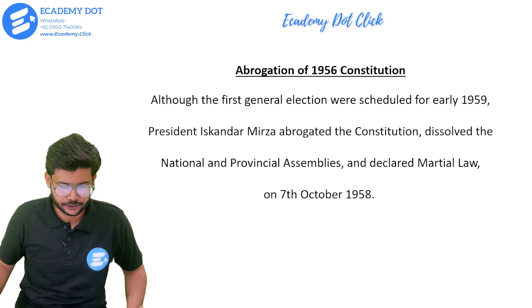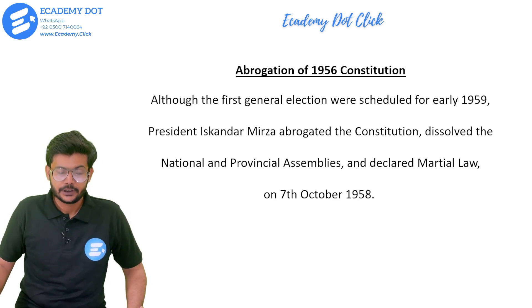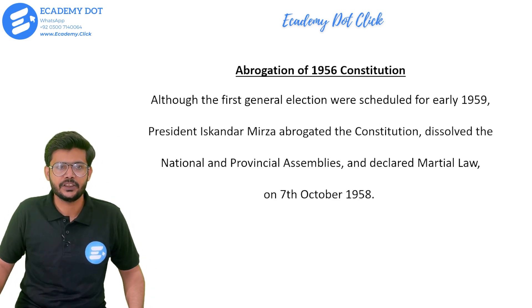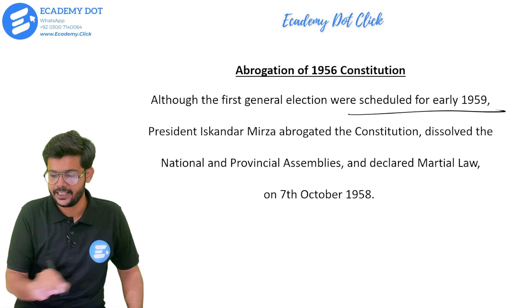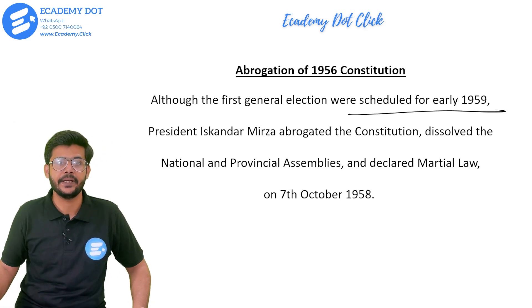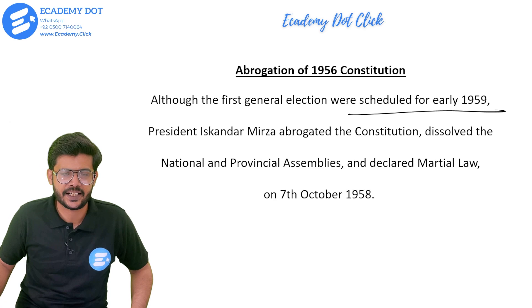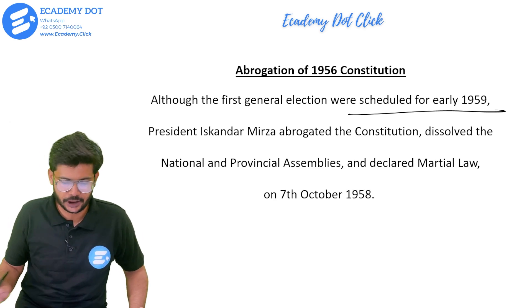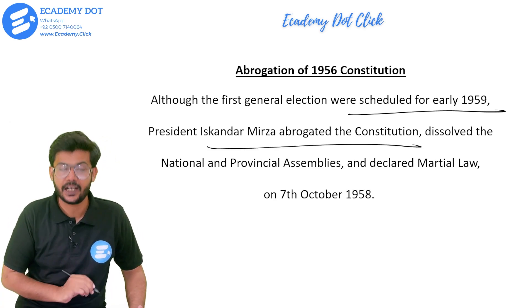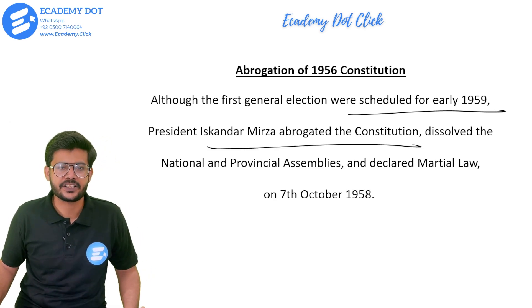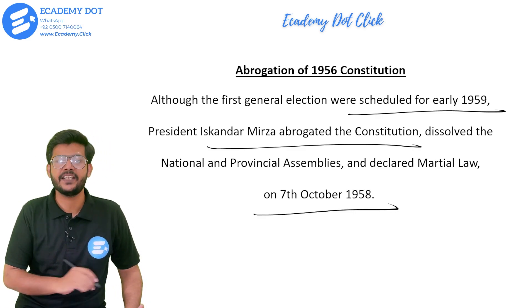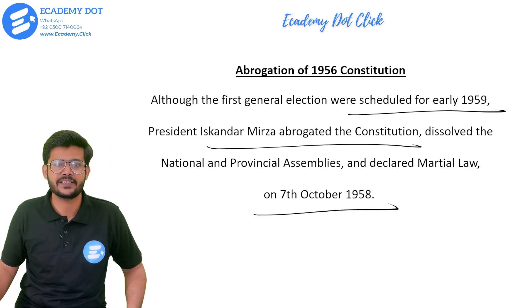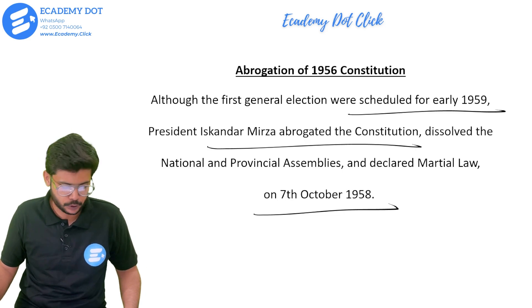Coming to the topic — abrogation of the 1956 constitution. The first general election was scheduled for 1959, early 1959. President Iskander Mirza abrogated the constitution, and the National Assembly and Provincial Assembly were dissolved on 7 October 1958. Pakistan's first Martial Law was enforced.